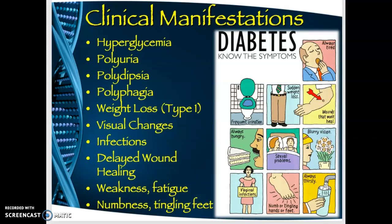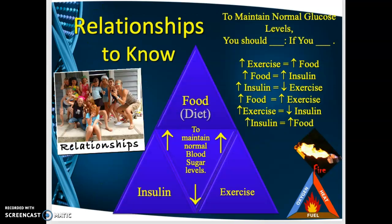A type 1 diabetic also experiences weight loss because the body can't break down sugar and must break down fats and proteins instead. Other complications include visual changes, increased incidence of infections, delayed wound healing, weakness and fatigue, and numbness and tingling in the feet.